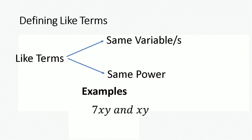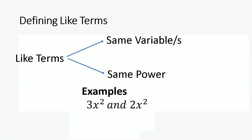Here's another example. If I had 7xy and xy, these two terms are alike because they have the same variables — that is, the product xy — and xy are written to the same power, that is x is written to the power of 1 and y is written to the power of 1. Here's another example: 3x squared and 2x squared. These are the same terms simply because you have an x squared term in common — same variables written to the same power.